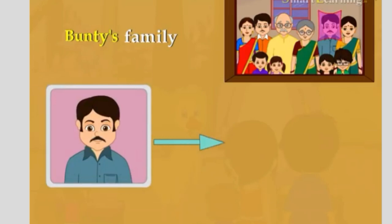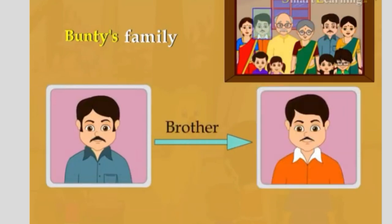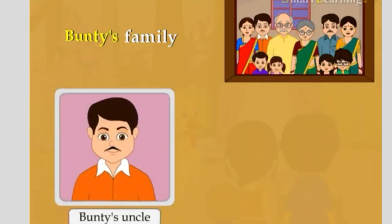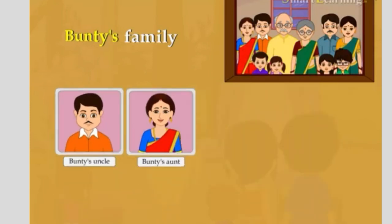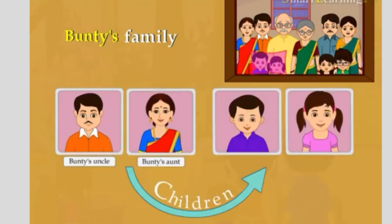Bunty's father also has a brother. He is Bunty's uncle. And this is his wife, who is Bunty's aunt. Bunty's uncle and aunt have two children. They are Bunty's cousins.